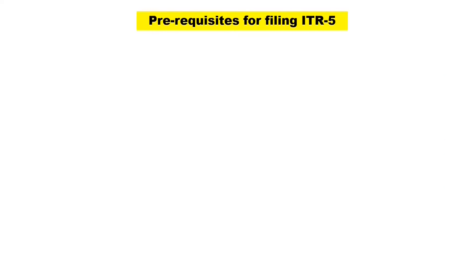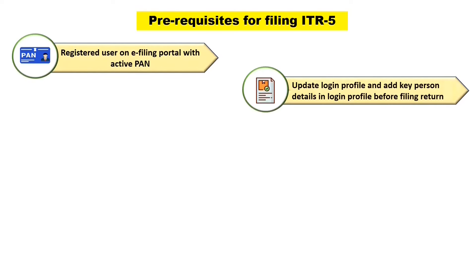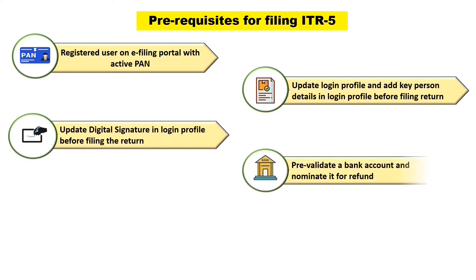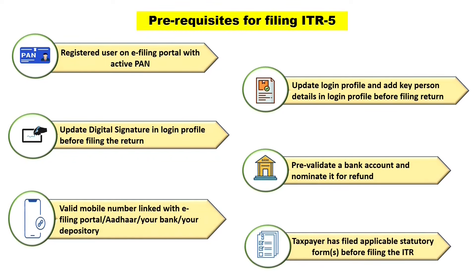Before going to the FAQs on ITR-5, let us see the prerequisites for filing. In order to file on the e-filing portal, you should be a registered user with an active PAN. You must update your login profile and add key person details before filing the income tax return. You must also update digital signature certificates in the login profile before filing. You should pre-validate a bank account and nominate it for refund. It is recommended to have a valid mobile number linked with the e-filing portal or your Aadhaar, bank, or depository. It is also advisable to file applicable statutory forms before filing the income tax return.